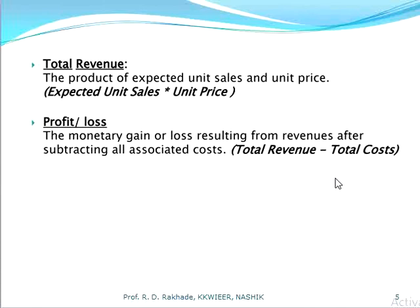Total revenue is calculated as expected unit sales multiplied by unit price. Profit or loss is the difference between total revenue generated and total expenditure or total cost used for making that product.